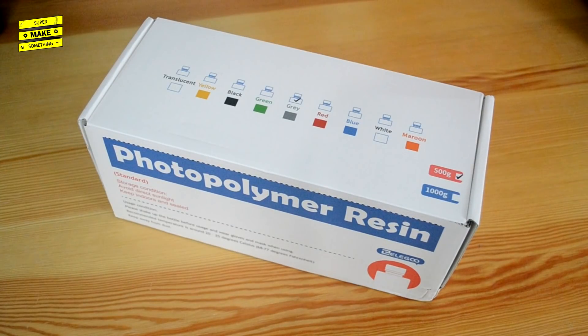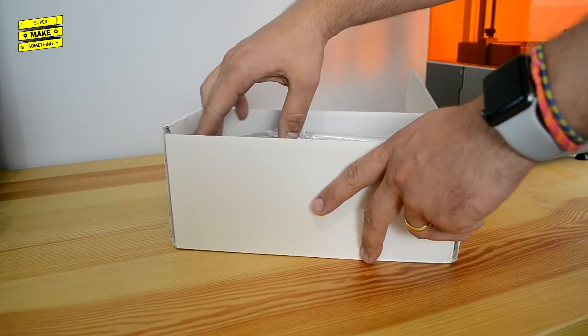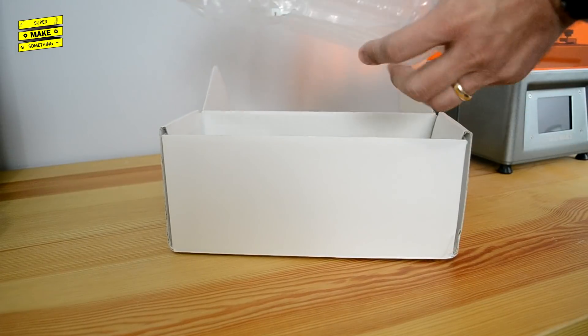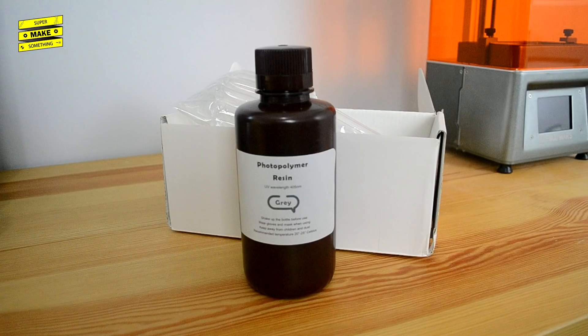Interestingly, the box did not contain any sample material to print with, something that is common with FDM printers, so if this is your first SLA or MSLA machine, be sure to pick up some 405 nanometer photopolymer resin when you order your printer as well.